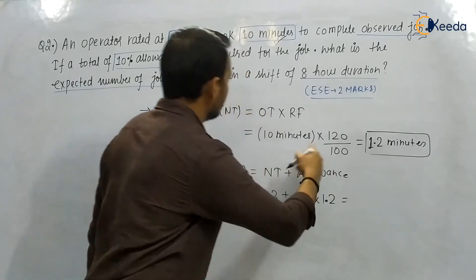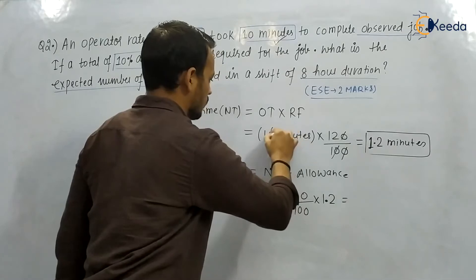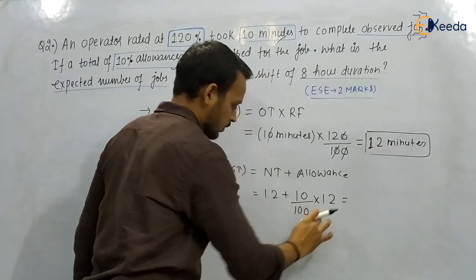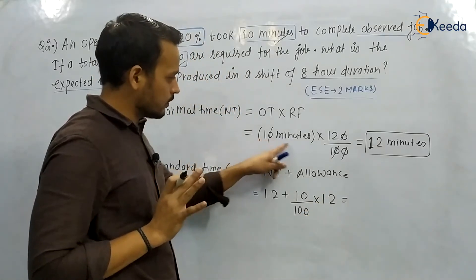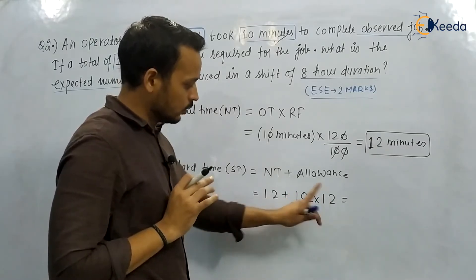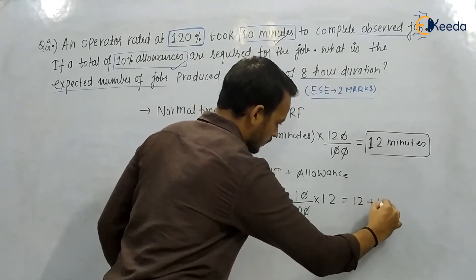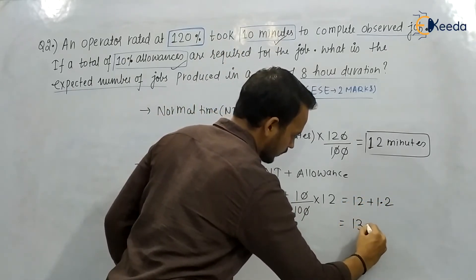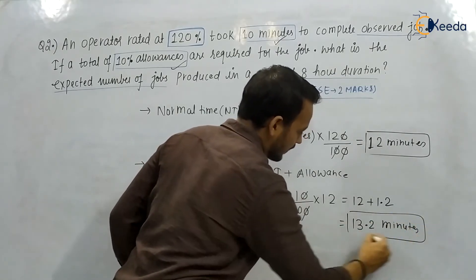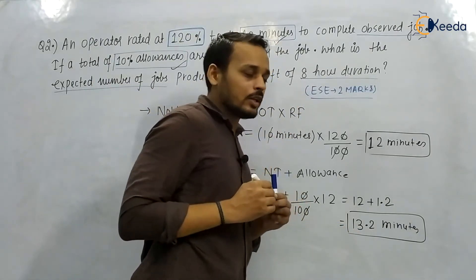So standard time = 12 + 1.2 = 13.2 minutes. This is the time taken to complete a single unit. They are asking how many units are going to be produced in an 8-hour duration, which is 480 minutes.